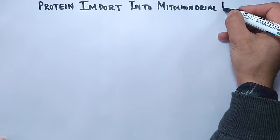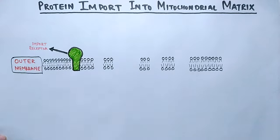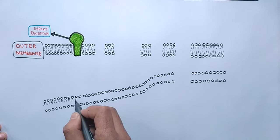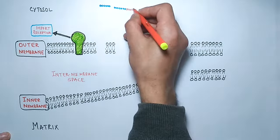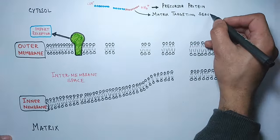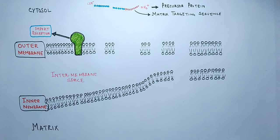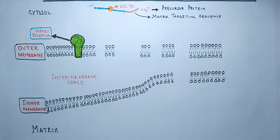Now let's see the detailed pathway for protein import into the mitochondrial matrix. The mitochondria has an outer membrane with import receptors that recognize matrix targeting sequences, and an inner mitochondrial membrane barrier. The precursor protein has a C-terminus and N-terminus, with matrix targeting sequences on the N-terminus end. To keep the precursor protein in an unfolded state, cytosolic HSC70 molecules bind to the protein, because it is the unfolded state that gets transported through channel pores into the mitochondrial matrix.